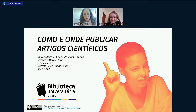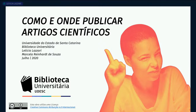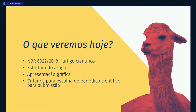Vamos fechar a câmera agora para não sobrecarregar a transmissão para o YouTube. O que vamos ver hoje? Começaremos falando sobre a NBR 6022, que é a norma de artigos científicos — ela trata da estrutura do artigo e sua apresentação gráfica. Essa primeira parte será ministrada pela Letícia. A segunda parte, ministrada pela Marcela, terá enfoque nos critérios para a escolha do periódico científico para submissão: como escolher onde publicar após o artigo estar pronto.